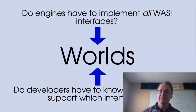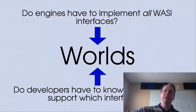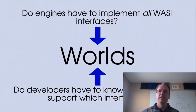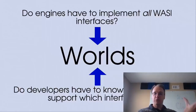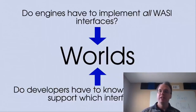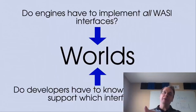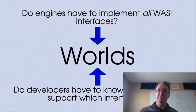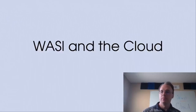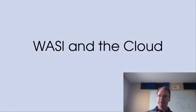The component model has an answer to that, and it's called Worlds. Worlds are a mechanism for defining subsets of APIs — for example, we can combine WASI filesystem, WASI sockets, environment variables, and command-line options together and call that a Command World. On the other hand, we have WASI messaging, WASI SQL, and WASI HTTP, which we can put together and call a Cloud World. These different worlds are independent of each other; they define their own APIs and a set of things you can work with, mapping directly to particular use cases.